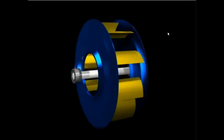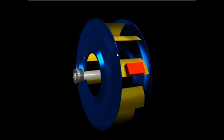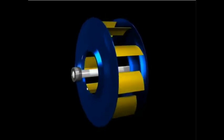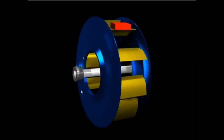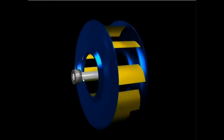So if we have static unbalance, it's all in one plane. Number one, we see that the motion is at the running speed, so we see the high 1x peak. Number two, if you look closely, the motion here is circular.